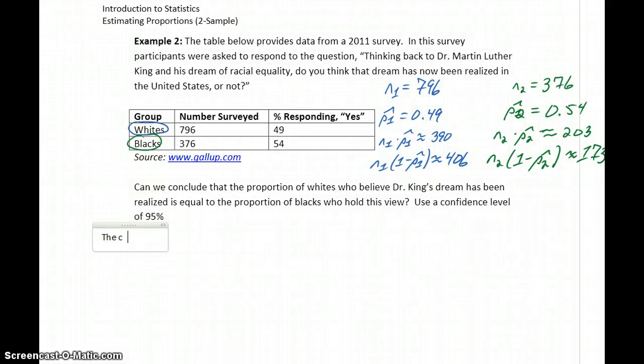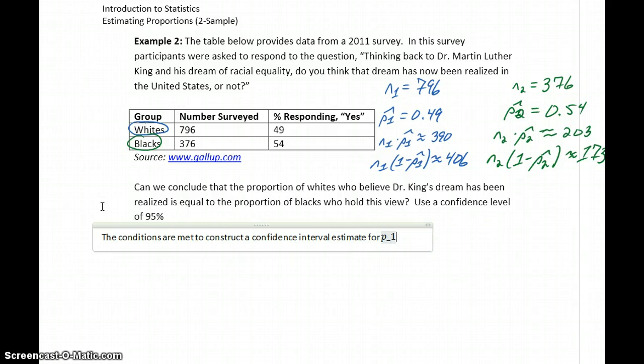Again, we can start by saying that the conditions are met to construct a confidence interval estimate for P1 minus P2, since both our samples have at least 10 successes and 10 failures.